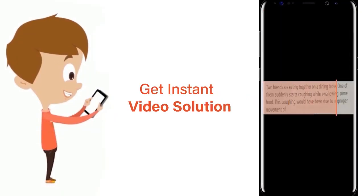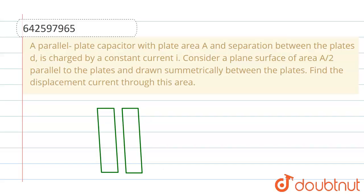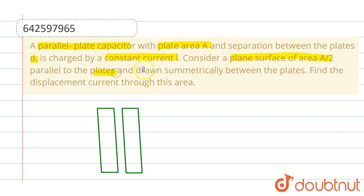The given question is: a parallel plate capacitor with plate area A and separation between the plates d is being charged by a constant current i. We have to consider a plane surface of area A by 2, parallel to the plates and drawn symmetrically between the plates. We have to find the displacement current through this area.